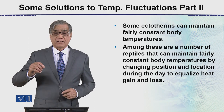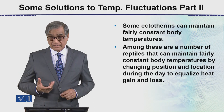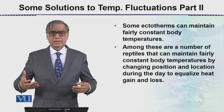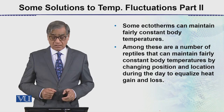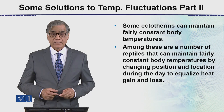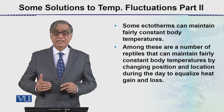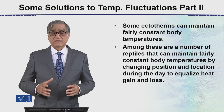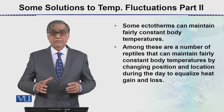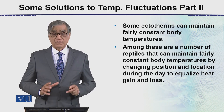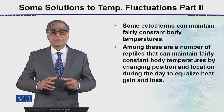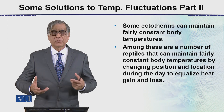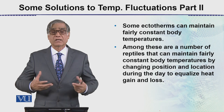Some ectotherms can maintain a fairly constant body temperature. This includes amphibians and reptiles — such as lizards and alligators. These creeping animals orient their bodies maximally towards the sun to gain heat and maintain their body temperature. Such ectotherms are mostly found in tropical regions, where environmental temperature does not fluctuate as much, allowing them to survive, reproduce, and use their energy efficiently for food gain and reproduction.